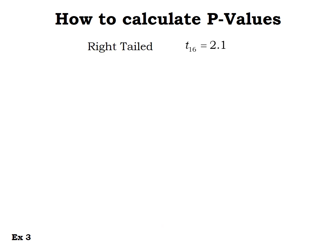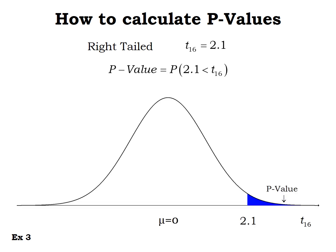For a right-tailed test with the same t-score of 2.1, the p-value is the area to the right of the test statistic. Using t-CDF from 2.1 to infinity with 16 degrees of freedom, we get a p-value of 0.0260.